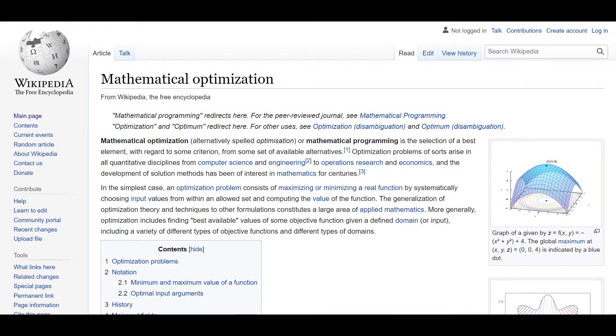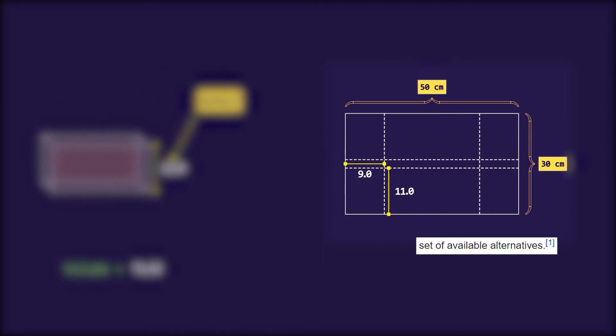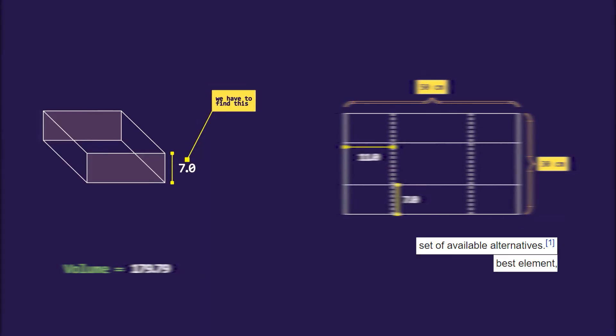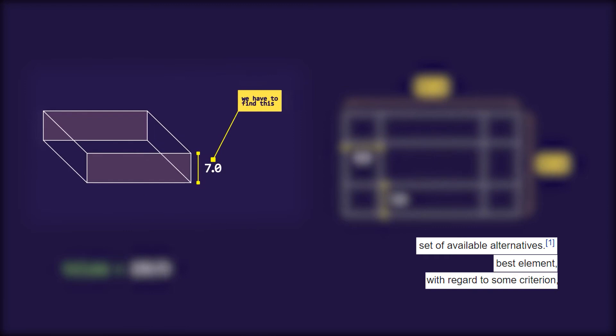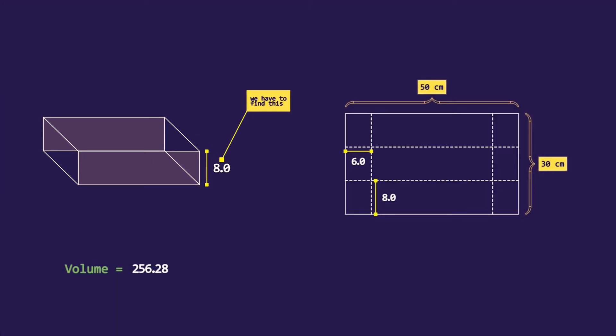The definition of optimization says it is the selection of a best element with regard to some criterion from some set of available alternatives. In our case all the possible pairs of cuts are the available alternatives and we have to find the best volume based on the criterion that it should be maximum. To choose the best height of the box that will give us maximum volume, by using some kind of optimization technique we can find this.